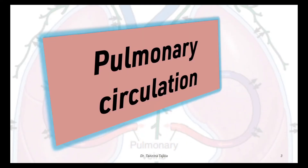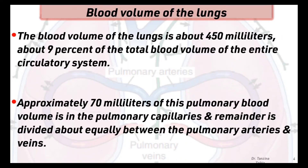Today's lecture is about pulmonary circulation. The blood volume of the lungs is about 450 milliliters, which is about 9 percent of the total blood volume of the entire circulatory system. Approximately 70 milliliters of this pulmonary volume is in the pulmonary capillaries, and the remainder is divided about equally between the pulmonary arteries and veins.